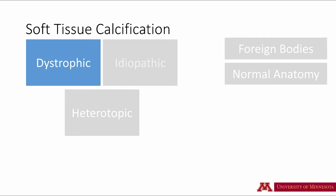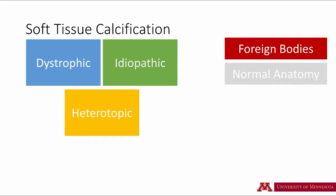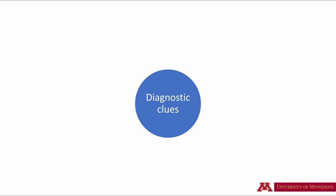Briefly, we can classify soft tissue calcifications into several categories. Some calcifications may be dystrophic. Some of the calcifications in the maxillofacial region may be idiopathic. Some calcifications and ossifications can be classified as heterotopic. I will also show you examples of several kinds of foreign bodies commonly seen in the maxillofacial region, some of which may mimic soft tissue calcifications. Finally, we will also discuss some of the normal anatomic landmarks that may confuse the clinician as areas of abnormal calcification. Similar to any kind of diagnostic procedure, you will need to develop a systematic approach to diagnosing soft tissue calcifications and ossifications.